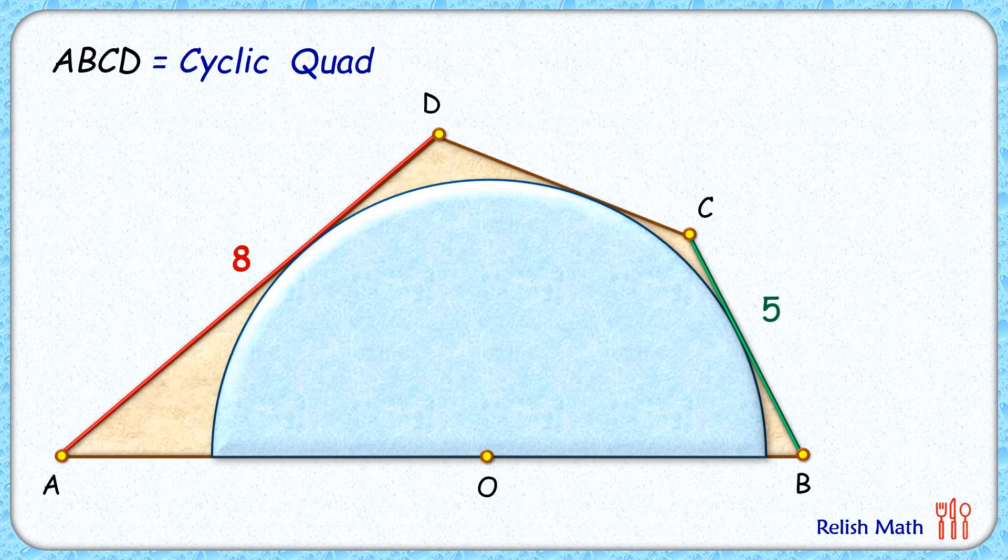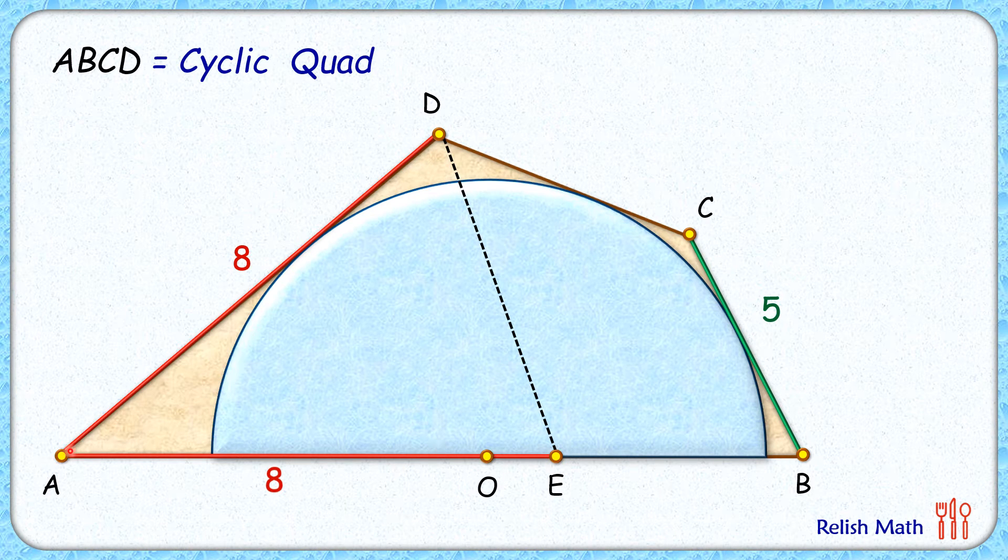Let's check the solution. We start by taking a point E on the line AB such that length AE is 8 centimeters. Now let's join DE. So triangle ADE is an isosceles triangle.